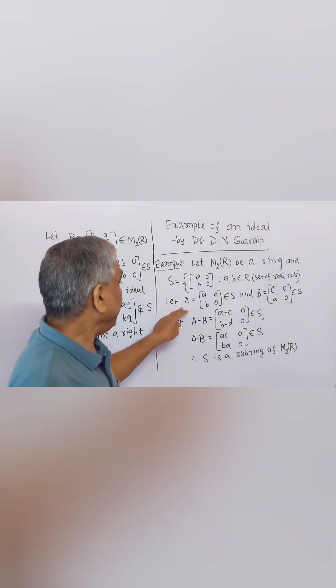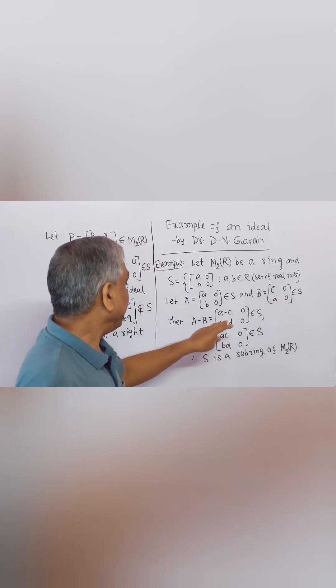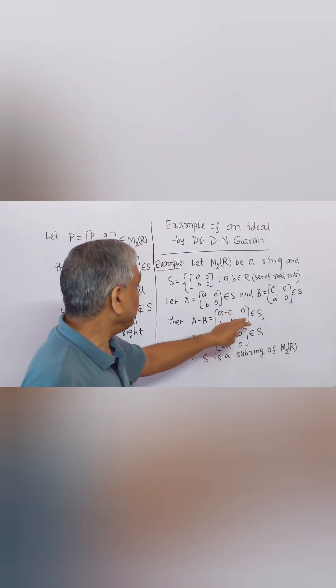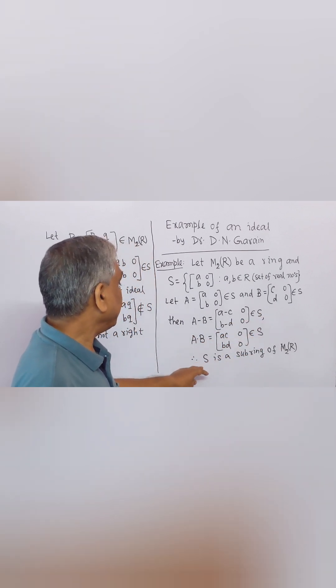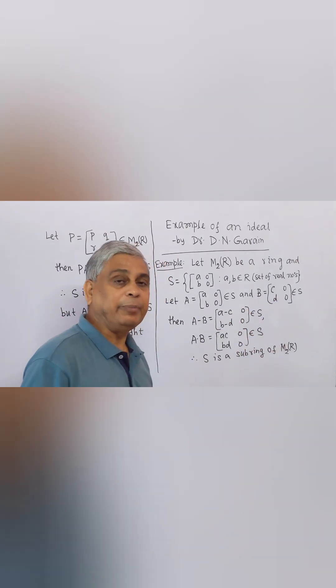Let A, B belong to S. Here, A minus B belongs to S and A multiply B belongs to S. Therefore, S is a sub-ring of M2R.